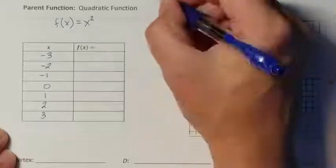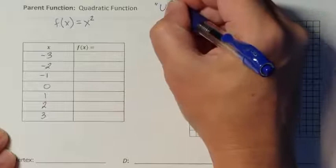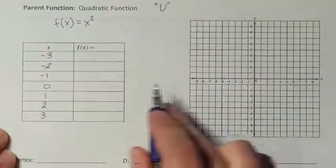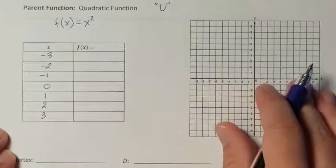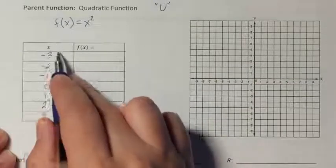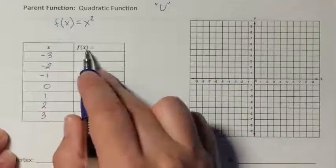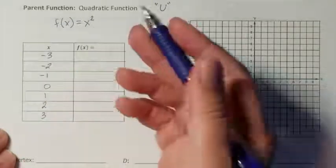Now a quadratic function is the shape of a U. So we're hoping when we graph it that these coordinate points will help us form the U. So this is your x, y table, because it's an f of x function, this is the f of x table.